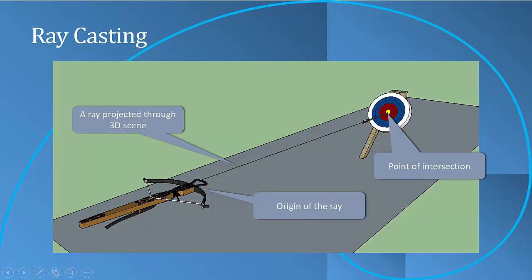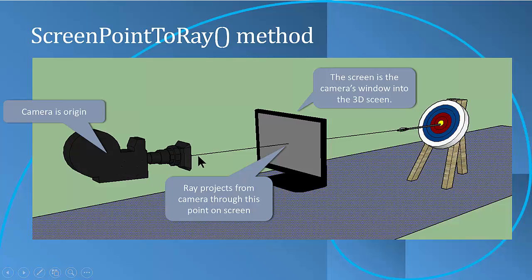With raycasting, if you can imagine that we're shooting something from an object — in this case a crossbow — and we're trying to hit a target, we can think of a ray as a vector that goes from the origin of the object to a point of intersection in some plane-like object. We're going to use the camera as the origin, project a ray through the center of the screen — points on the screen start at 0,0 which is the upper left — so we go halfway down and halfway in to get the center point. We'll use the ScreenPointToRay function to do that.